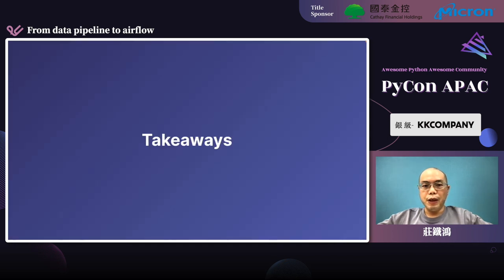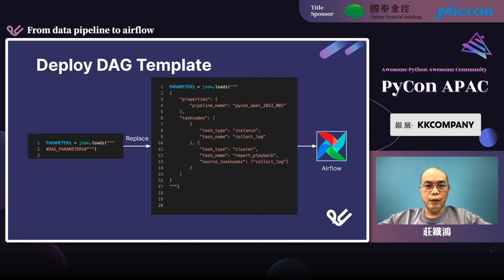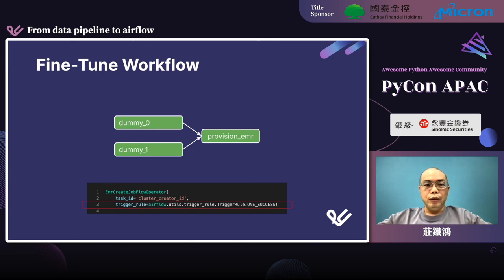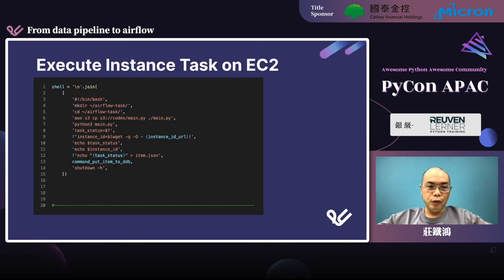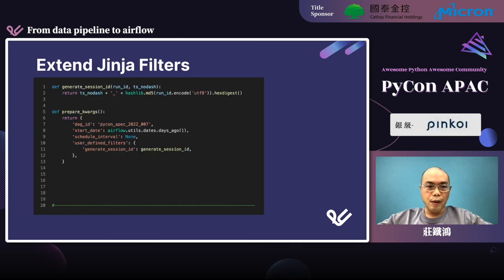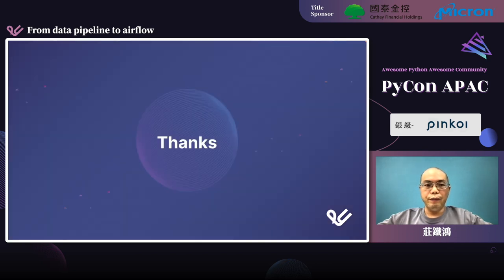I have talked about some problems we encountered and how we solved them. Here are the takeaways: use a template DAG script to leverage existing tools and knowledge; changing task trigger rules grants us power to fine-tune the workflows; although EC2 is not well supported by the AWS provider, we managed to execute tasks by sending shell scripts as user data; and customizable Jinja filters let us create configurable session IDs. That's all I have today. Thank you.